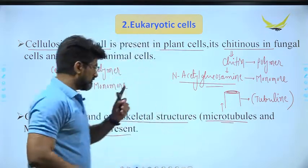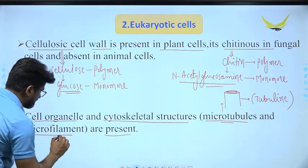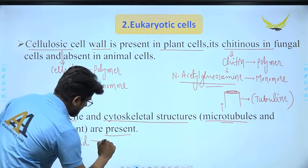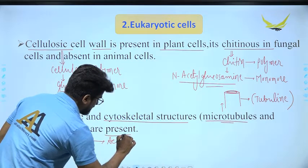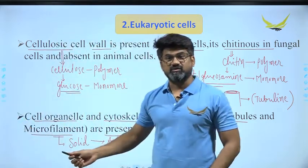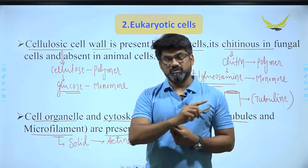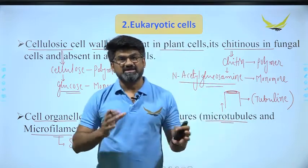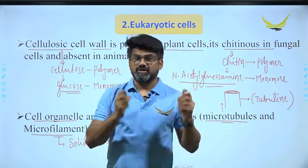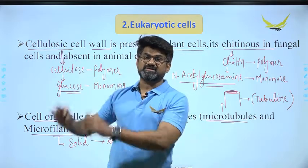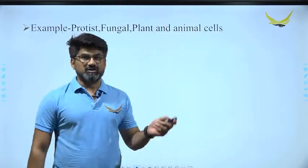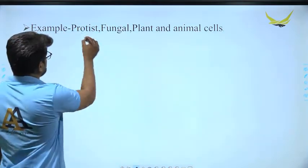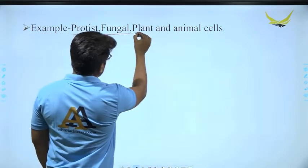Microfilaments are solid, rod-like structures made up of actin protein. So microtubules are made of tubulin protein and microfilaments are made of actin protein. These cytoskeleton structures are present in eukaryotic cells but absent in prokaryotic cells. Examples of eukaryotic cells include protist, fungal, plant, and animal cells.